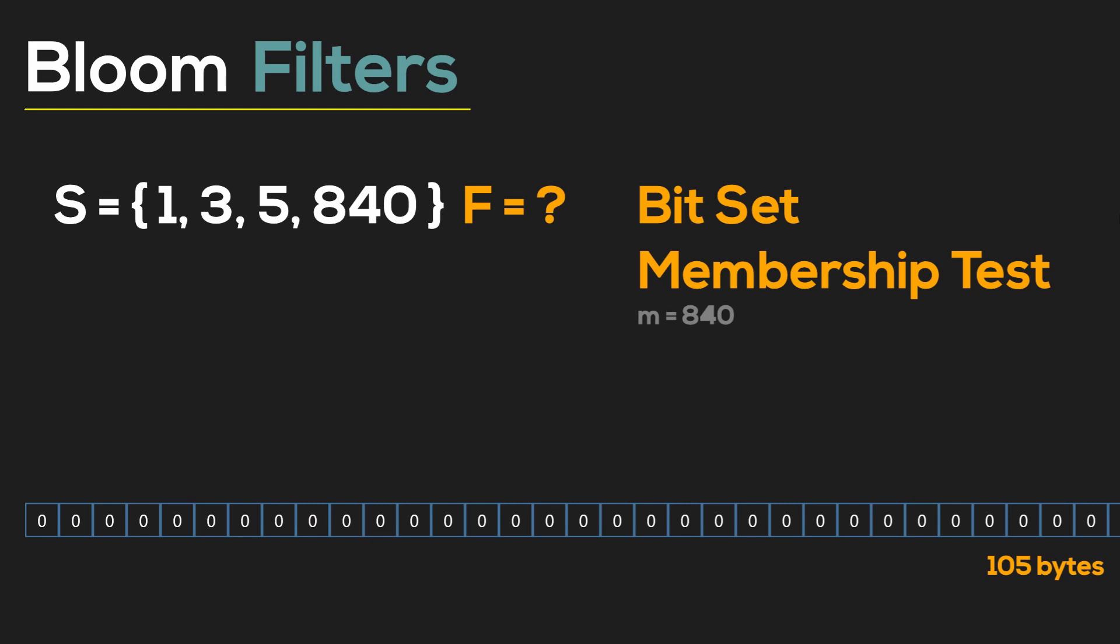I made a separate video on bit sets you should probably check it out. Bloom filters are a data structure that were designed to solve this problem efficiently. They combine ideas from hash sets and bit sets into a single data structure. So let's create a bit set with 32 bits in it. Now let's hash each number but instead of using a single hash function let's use k different and independent hashing functions, for example two. Now each number occupies two bit set entries.